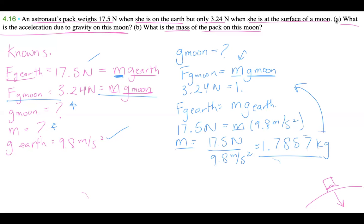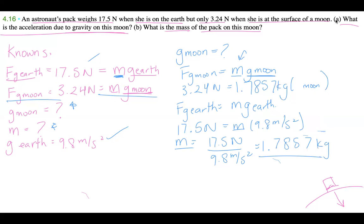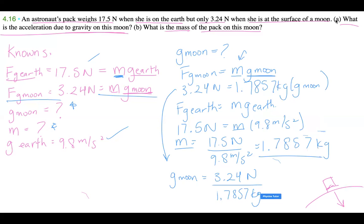Now we can plug mass into the moon equation. We have 1.7857 kilograms times g_moon equals 3.24 newtons, so g_moon equals 3.24 newtons divided by 1.7857 kilograms, which gives us 1.81 meters per second squared.